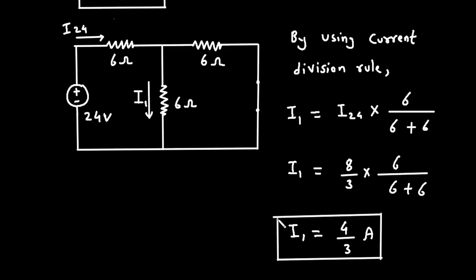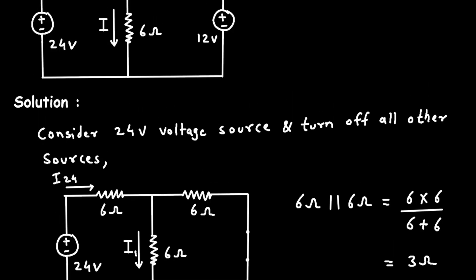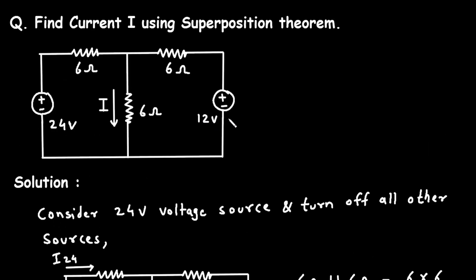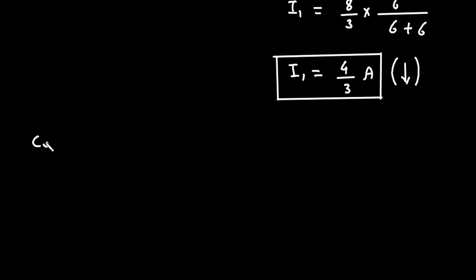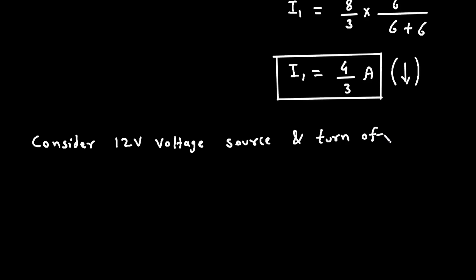This is the current due to 24 volt voltage source. The direction of I1 is downward. Next, step number 2 is to consider the 12 volt voltage source and turn off all other sources.